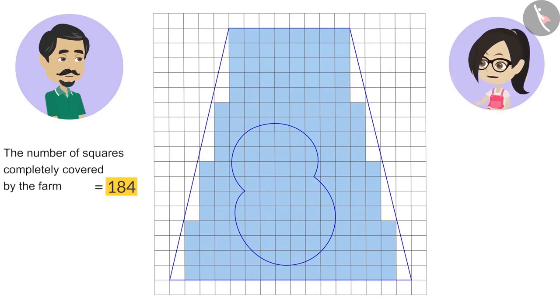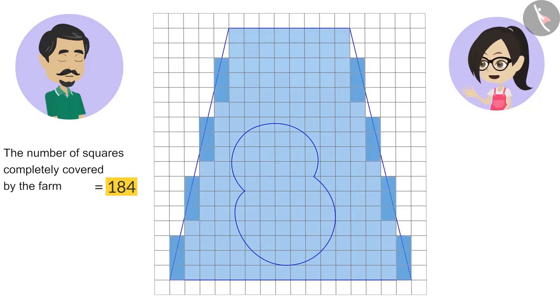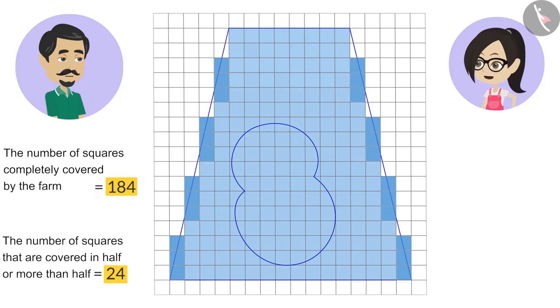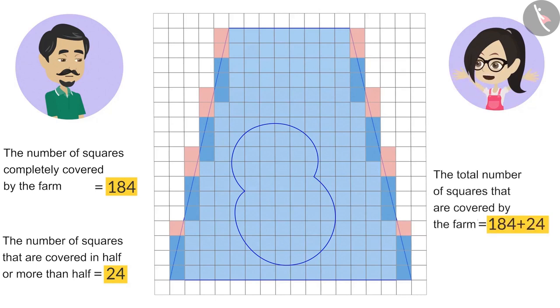Now, we will count the squares that are covered in half or more than half. Their number is 24. Some of the squares are covered in less than half by the farm. We don't count them.